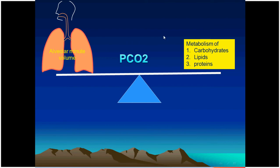Overproduction of CO₂ in a chronic state is rarely encountered. The most common clinical scenario in critical care is liver steatosis, where carbohydrate infusion exceeds 7.5 mg/kg/min — leading to fat deposition in the liver. When carbohydrates are converted to fat, the respiratory quotient becomes 8 (not 0.8), meaning one molecule of oxygen consumed produces 8 molecules of CO₂.